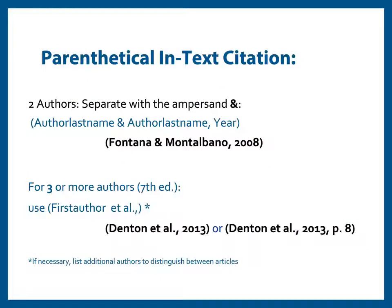Most researchers in the social sciences don't work alone, so there will often be additional authors. When your source has two authors, include both authors in the citation and separate them with an ampersand, as you see in the example on the screen: author last name, ampersand, second author last name, comma, year. Do not type 'and' — that is not proper APA format.